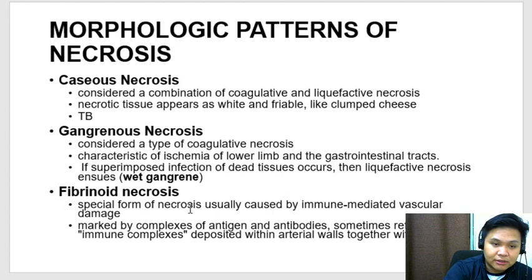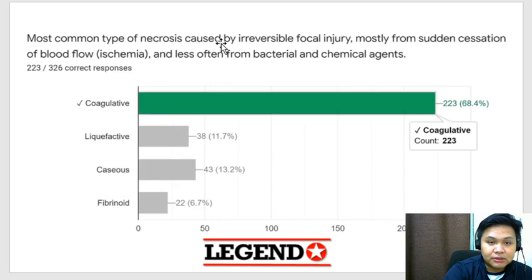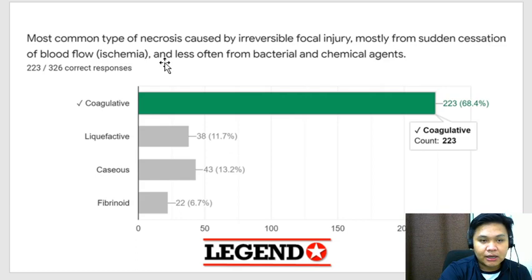Fibrinoid necrosis is a special form of necrosis usually affecting blood vessels, with deposition of immune complexes. The most common type of necrosis caused by irreversible focal injury from sudden cessation of blood flow is coagulative necrosis — best example: myocardial infarction.